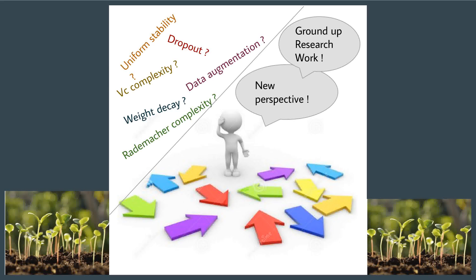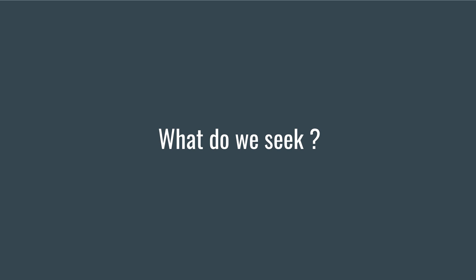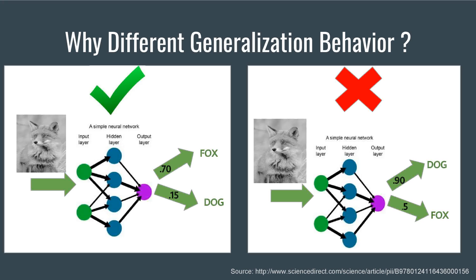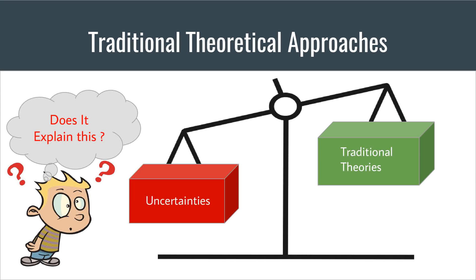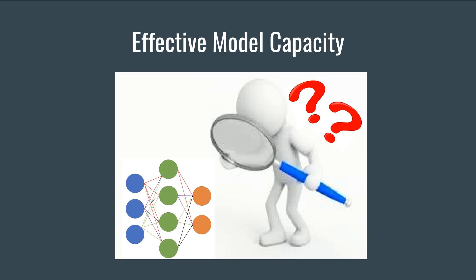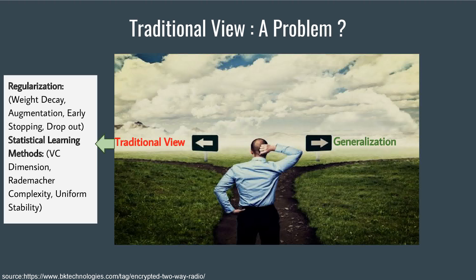Rethinking generalization is hard, because it requires us to explore neural networks from a completely different perspective. The questions we seek answers to are: what distinguishes neural networks that generalize well from those that don't? Can it be explained by traditional theoretical approaches? How can we understand the effective model capacity of feedforward neural networks and its effect on generalization ability? They try to problematize the traditional view of generalization by showing that it is not capable of distinguishing between neural networks that have radically different generalization performance.